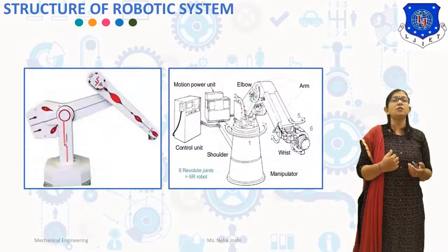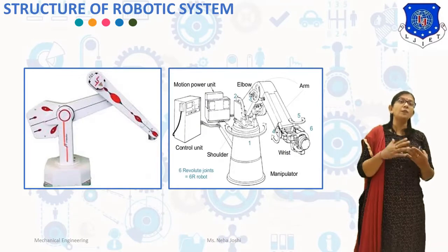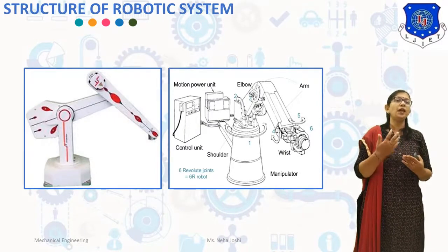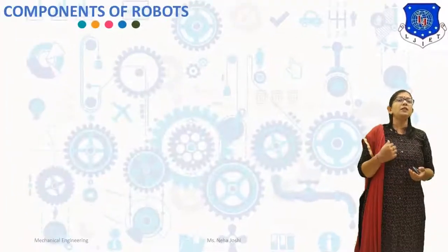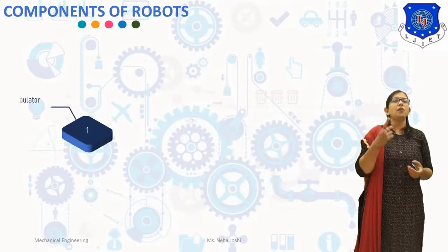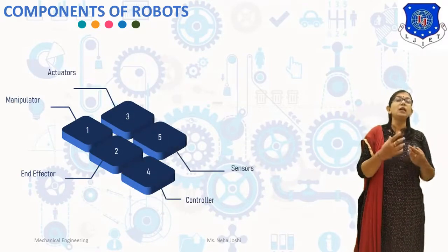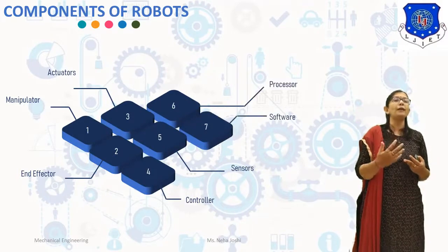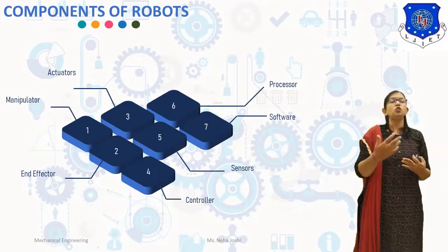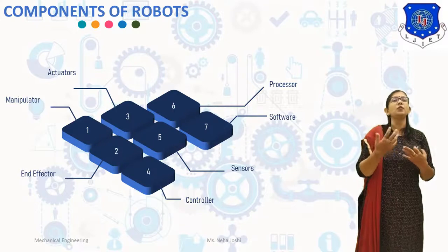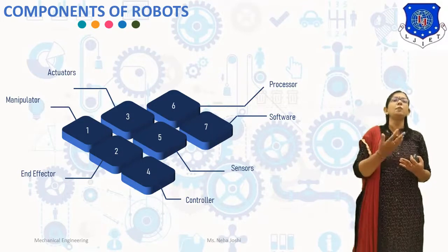Here you can see the structure of a robotics system. Generally, a robot consists of an elbow, arm, wrist, manipulator, control unit, and motion power unit. The first component is the manipulator, which is a combination of mechanical linkages connected by joints to form an open loop kinematic chain. The manipulator is capable of movement in various directions; the joints produce motion that is either rotary or linear. The manipulator performs tasks through the end effector connected to it.